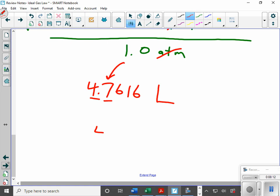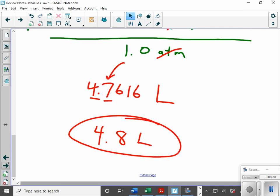It's one, two, so does that six round that seven up? Absolutely. So to answer my question, what is the volume of carbon dioxide produced? That would be 4.8 liters of carbon dioxide.